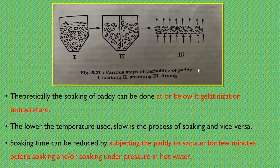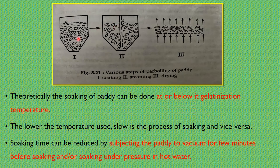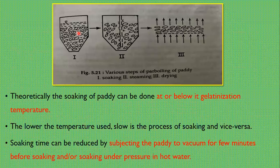This diagram shows the parboiling process. In this diagram, the first step is soaking, where the paddy grains are soaked for a particular duration of time. After that, the soaked paddy is transferred into the steaming kettle where gelatinization of the starch takes place and the paddy structure becomes more compact. The grains are then dried in a shed or in a mechanical dryer.